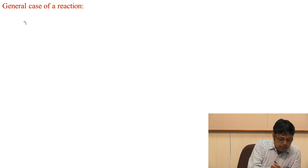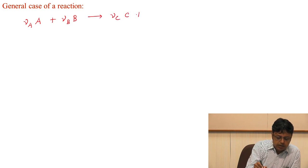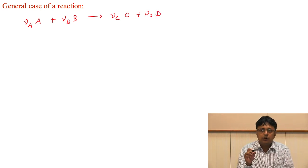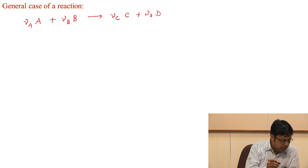We are now going to discuss the general case for a stoichiometrically balanced equation. By general case, what we mean is that if we write the equation as νA·A + νB·B → νC·C + νD·D, the question is: what will be the most general form of the reaction quotient and the equilibrium constant for this reaction?